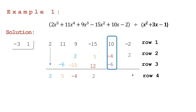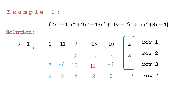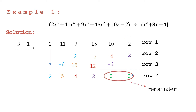Then let's add the fifth column: positive 10 plus negative 4 is equal to positive 6, and positive 6 plus negative 6 is equal to 0. Since the sum is zero, no need to multiply that to our divisors. We just proceed to adding the last column: negative 2 plus 2 is also equal to 0. The last two coefficients are your remainder.